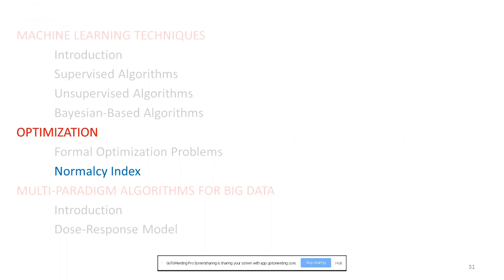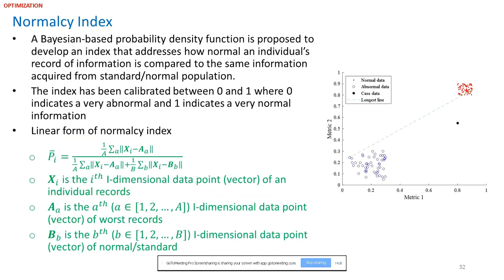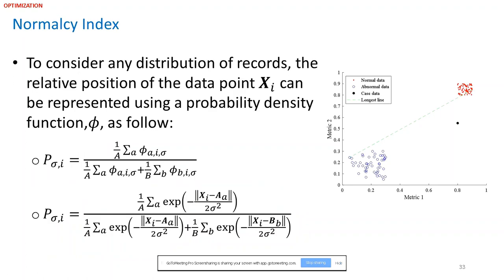Now I'll talk about a new clinical metric we propose called the normalcy index. Using probability density functions that measure similarities among data points, we propose an index to address how normal an individual's record of information is compared to the same information acquired from a standard or normal population. The closer the individual record is to the cluster of normal data, the more normal that record is. We calibrate this index to go between zero and one, where zero indicates very abnormal and one indicates very normal information. We propose a linear form but also improve it using probability density functions.